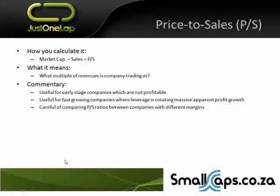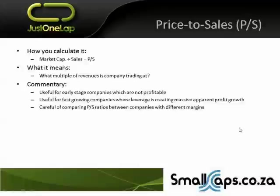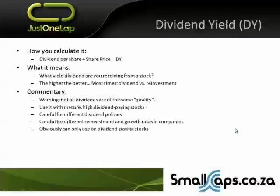One of its downfalls is to be careful of comparing price to sales ratios between companies with very different margins. They might have different margins because they're in different growth phases of their life cycle. But if they're in similar growth phases with different margins, you get different returns on equity, different profits — and profits drive valuation models, not sales. So price to sales is useful, but it's got its downfalls.